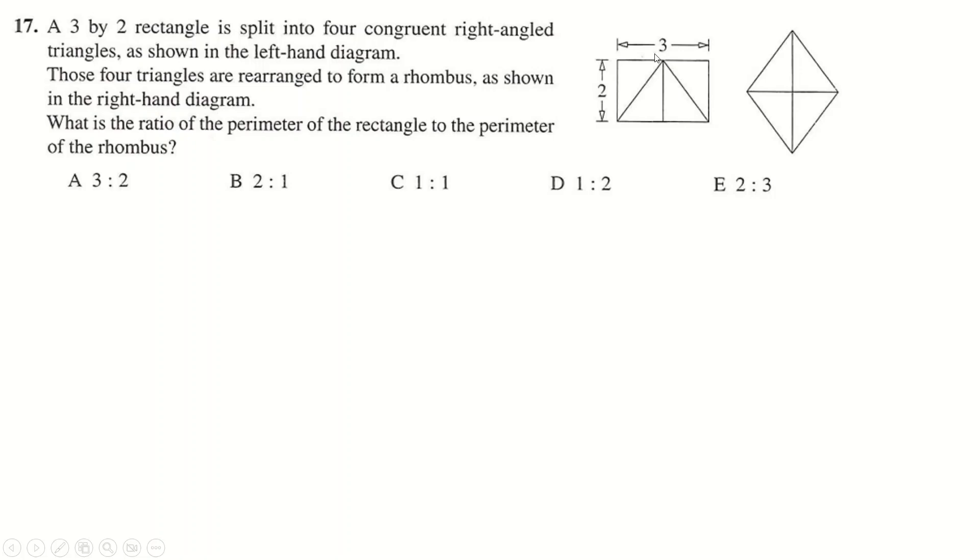This is quite a cool question. So the perimeter of this shape is clearly 3 plus 2 plus 3 plus 2. So that's 10. Now this shape is made up of the 4 hypotenuses of these things. So if that's 3, then this here is 1.5. And then we do 1.5 squared plus 2 squared. And then square root it to find this length. 2 squared is 4. 1.5 squared is 2.25. We get 6.25. When you square root that, you get 2.5. 2.5 plus 2.5 plus 2.5 plus 2.5 is 10. And so the ratio is 1 to 1 because they are the same.